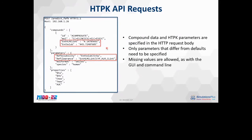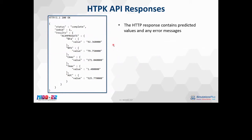Here is an example of a request from the client to the server. Compound data and HTTPk parameters are specified as part of the request body, using similar syntax to the HIA files. We're asking that a user-defined solubility be used preferentially, with the ADMET Predictor model as a fallback in the case of a missing value — and similarly for clearance. In the compound section of the request, for each compound, in addition to an ID and a SMILES structure, you have the option of providing user-defined data. The response from the server includes, for each compound, a list of predicted properties — FA, FB, PK parameters, and so on — as well as any error messages.